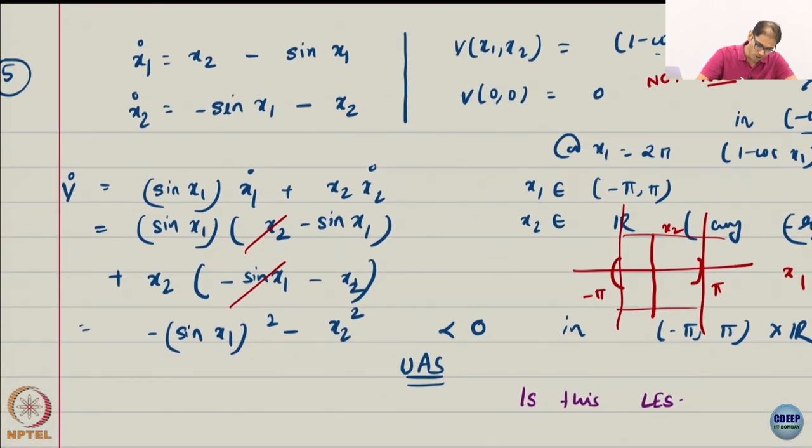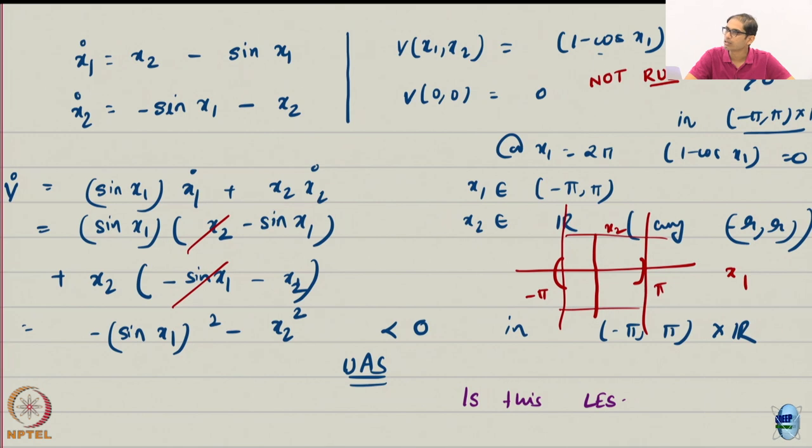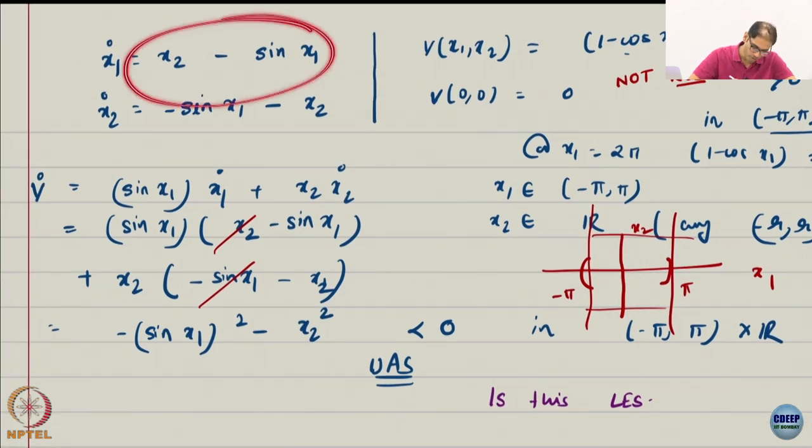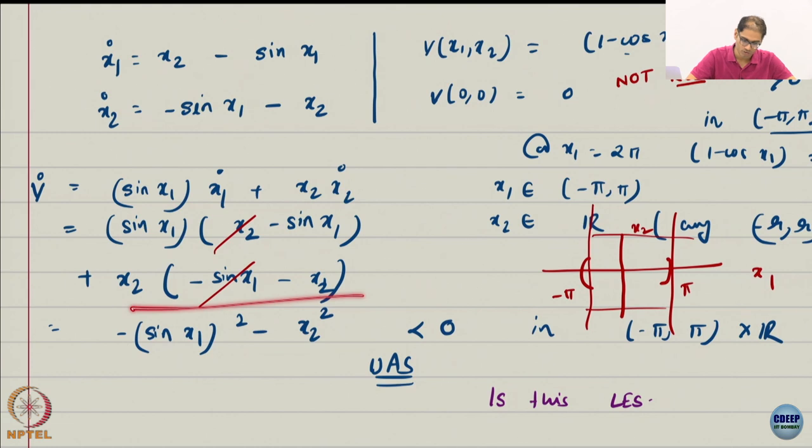Now if I compute V dot as always, I will get sin x1 x1 dot from here and x2 x2 dot from here. Now I substitute for x1 dot. So sin x1 and x1 dot I substitute here, and x2 x2 dot I substitute here. Again, not doing anything too complicated. I am simply substituting the derivatives. In this case, because I have made a hack, everything turns out to be nice. We will see.